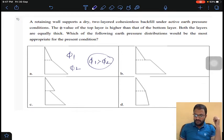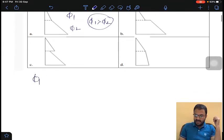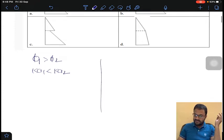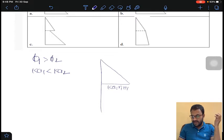When the value of phi decreases, the coefficient of earth pressure Ka value increases. That is Ka1 less than Ka2. So the coefficient of earth pressure for layer 2 is more. In that case, the pressure distribution diagram for layer 1 is Ka1 gamma 1 h1. Whenever we change from top layer to bottom layer, the value shifts to Ka2 gamma 2 h2. As Ka2 is greater, this will move further.